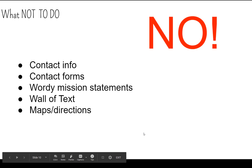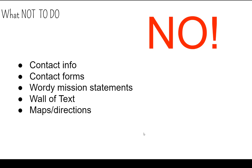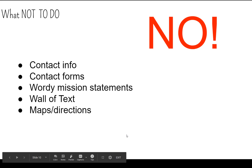Things not to include on your About Us page: I do not like to see contact information, contact forms, wordy mission statements, or a big wall of text — if you're scrolling and scrolling, you really need to edit things down. Maps and directions are another thing that should just go on a contact page. Most of these you can move to a separate designated page or a footer. Don't include this information at the expense of the storytelling and the Know, Like, and Trust building that people are really looking for when they come to your About Us page.